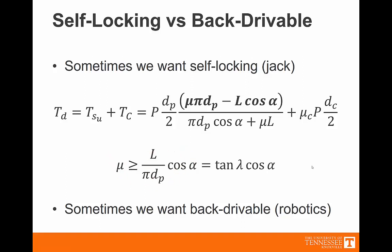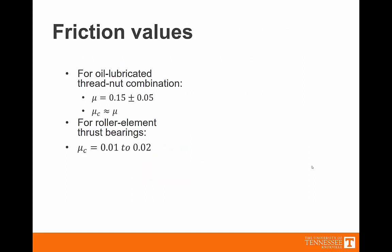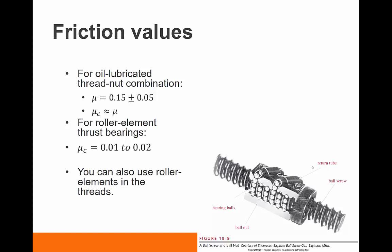So what are the types of friction values that we typically see? For oil lubricated thread and nut combinations, so metal on metal grinding but oil present, we typically see a coefficient of friction somewhere around 0.15, anywhere from 0.1 to 0.2. And in general, if you have oil lubricated nuts on some sort of housing, the collar friction will be roughly equivalent to the friction in the thread. Often we're going to want to put roller element thrust bearings as the picture showed earlier in the slides. And when we do that, we decrease the amount of friction by an order of magnitude. So going from 0.1 to 0.2, now we're going to 0.01 to 0.02.